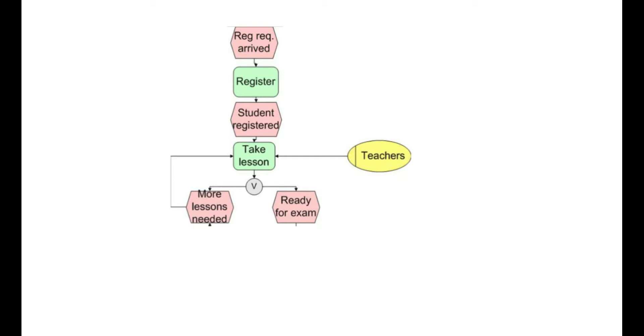When the lesson has been completed there are two alternatives so we get an XOR split. Either the student is ready for the exam and the right sub process is taken. Or the student needs to take more lessons and the left sub process is taken. This means the function take lesson is performed for the student once again.